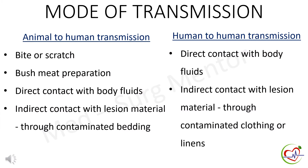Let's move on to the mode of transmission of monkeypox. Since this condition is a viral disease, transmission to humans can occur through contact with an infected animal or human, or with human bodily material containing the virus. Examples of animal to human transmission are bite or scratch, bush meat preparation, direct contact with body fluids, and indirect contact with lesion material or through contaminated bedding. Human to human transmission occurs when there is direct contact with body fluids and indirect contact with lesion material or through contaminated clothing or linen.